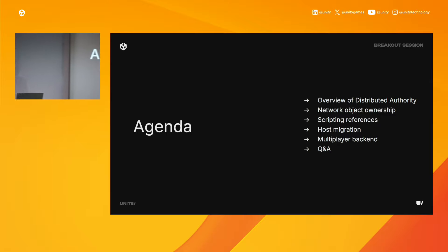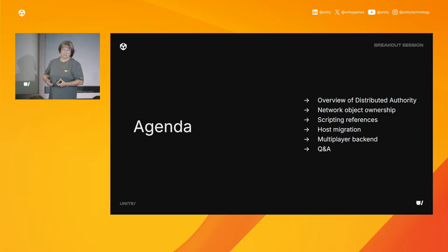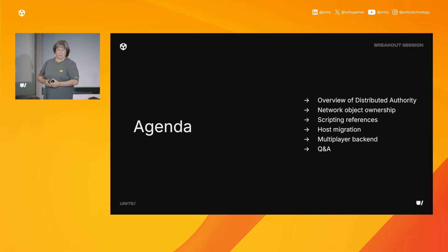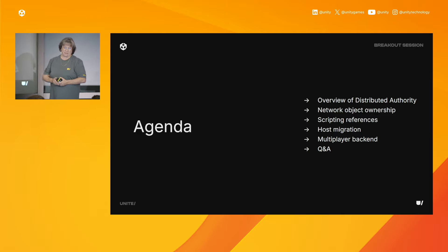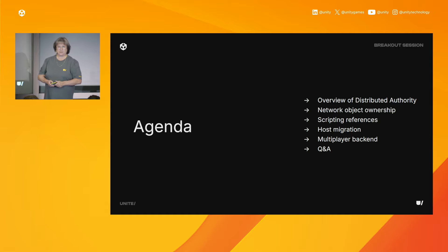In this session, I will focus on Distributed Authority, a feature that enables the creation of robust and cost-effective client-hosted games using Netcode for GameObjects. Our agenda will focus on five key topics: we'll begin by discussing the concept of Distributed Authority and how shared authority is distributed among multiple clients. Next, we'll examine network object ownership. Our third topic will cover scripting reference, integrating multiplayer services with Netcode for GameObjects. After that, we'll explore host migration, and finally we'll review the multiplayer backend. We'll conclude with a Q&A session.